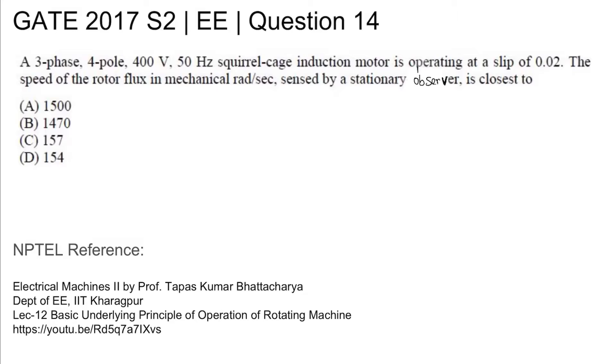This is GATE 2017 Set 2 Electrical Question Number 14. A three-phase, four-pole, 400 volt, 50 Hertz squirrel cage induction motor is operating at a slip of 0.02. The speed of the rotor flux in mechanical radians per second, sensed by a stationary observer, is closest to four given options.